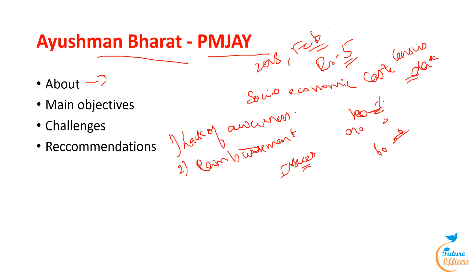The third challenge is fraud and abuse. The program must guard against and identify instances of fraud and abuse by dishonest individuals looking to take advantage for personal gain. It is imperative to fortify anti-fraud mechanisms and implement strengthened measures against individuals who engage in fraudulent and negligent activities under the scheme.